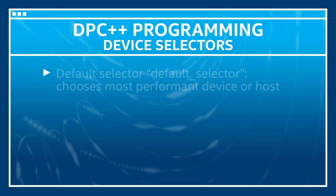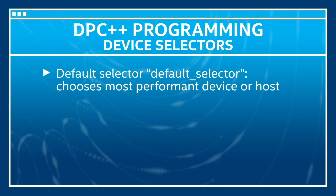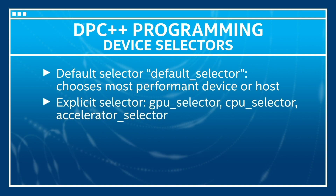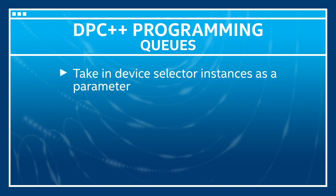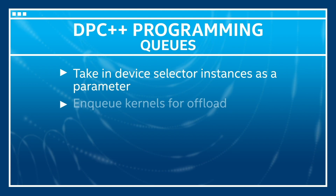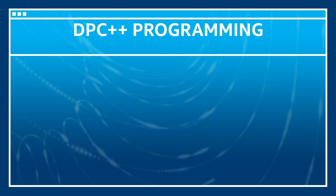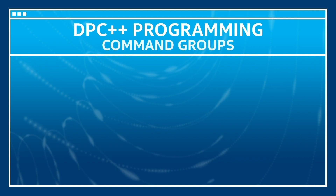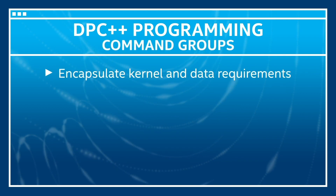First, let's talk about the basic data types of DPC++ starting with the device selectors. They are used to select devices to run kernel code on. The default selector class chooses the most performing device or the host device if no accelerator can be found. We also have other predefined selectors available. Next are queues, which take in device selector instances as a parameter and are used to enqueue kernels for offloading. Kernels are asynchronously scheduled at runtime based on data dependencies in order to ensure correct results. Command groups encapsulate the kernel and data requirements in a lambda.